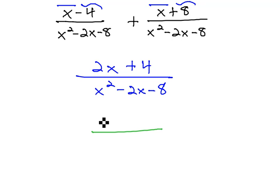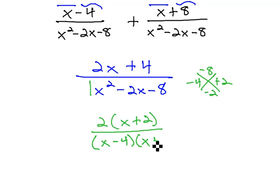The numerator has a GCF of 2, leaving behind x plus 2. In the denominator, we would use the AC method, multiplying the negative 8, adding to negative 2, which would be negative 4 and positive 2. Because there's a 1 in front of x squared, we are allowed to jump right to the factors of x minus 4 and x plus 2.